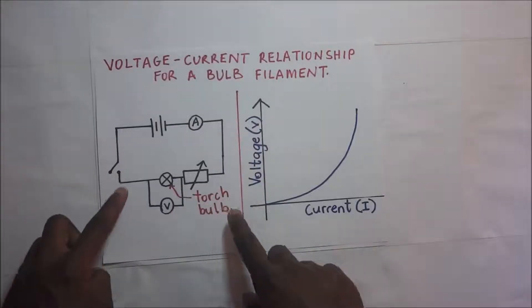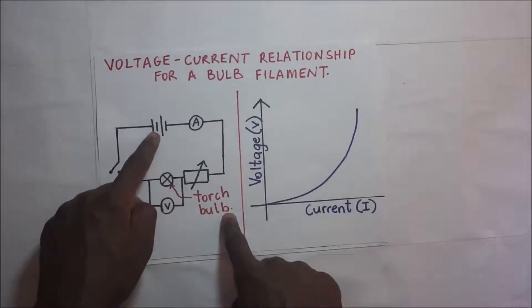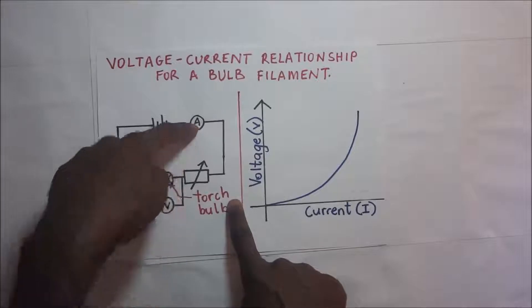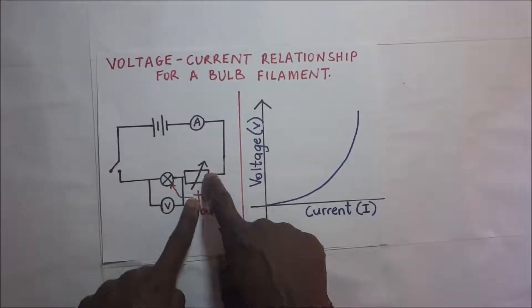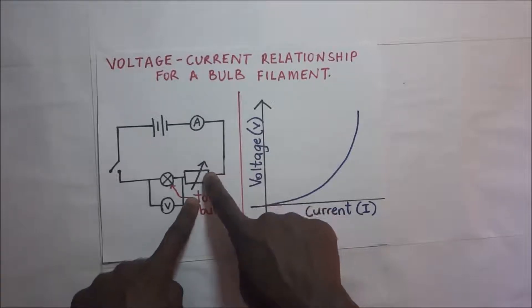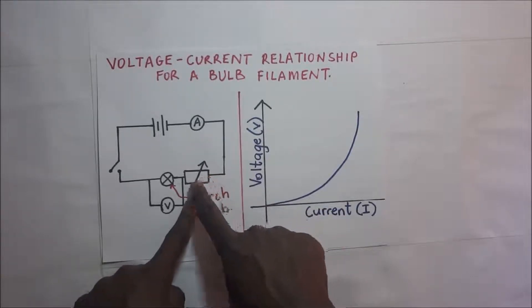We shall set up our apparatus just like here. We have two dry cells, an ammeter that is going to be measuring the current, and then a rheostat or resistor with variable resistance. This is what we'll be using to adjust the amount of current flowing through the circuit.